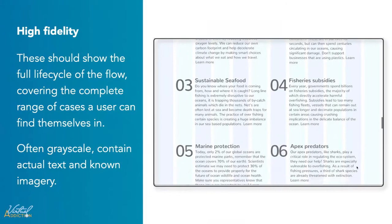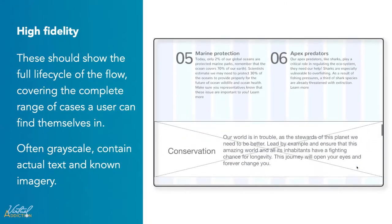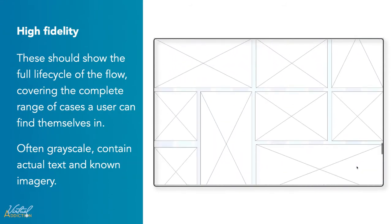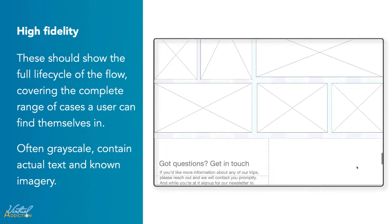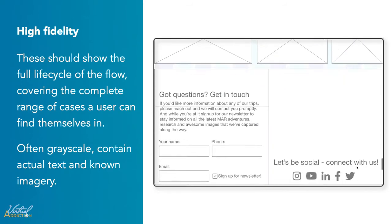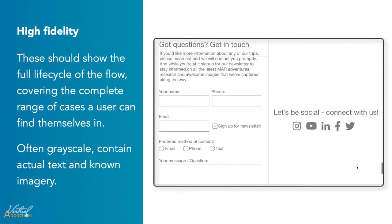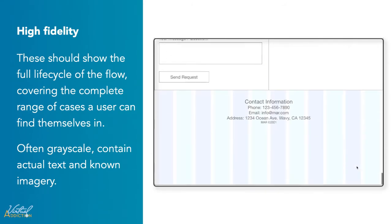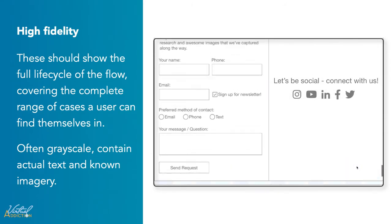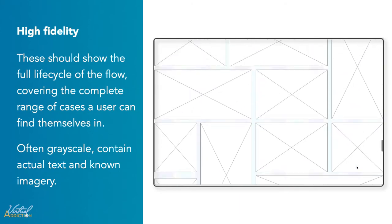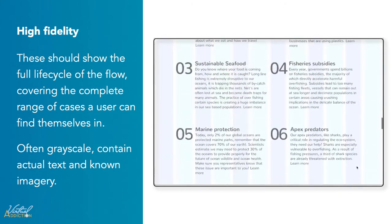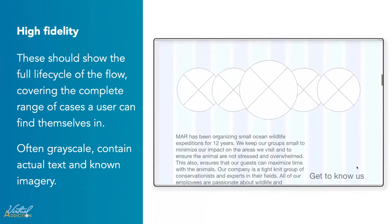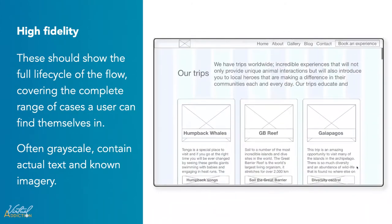High-fidelity wireframes often contain more details. They should contain actual text, and if you know what some of the images are, you can begin to add those as well. They don't have to look exactly like the finalized website, but we should be getting pretty close at this point.